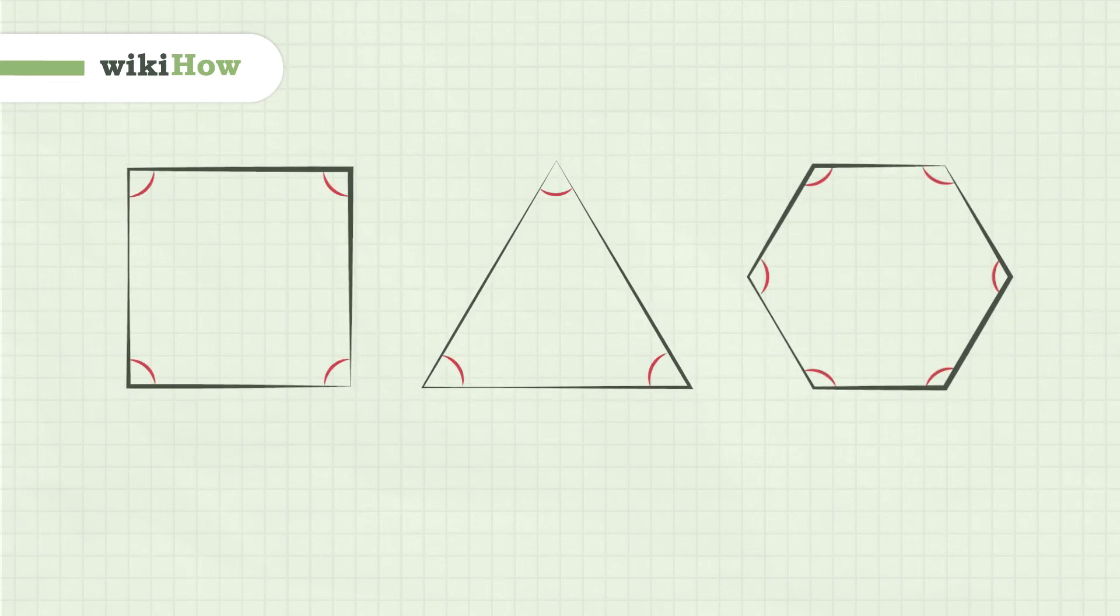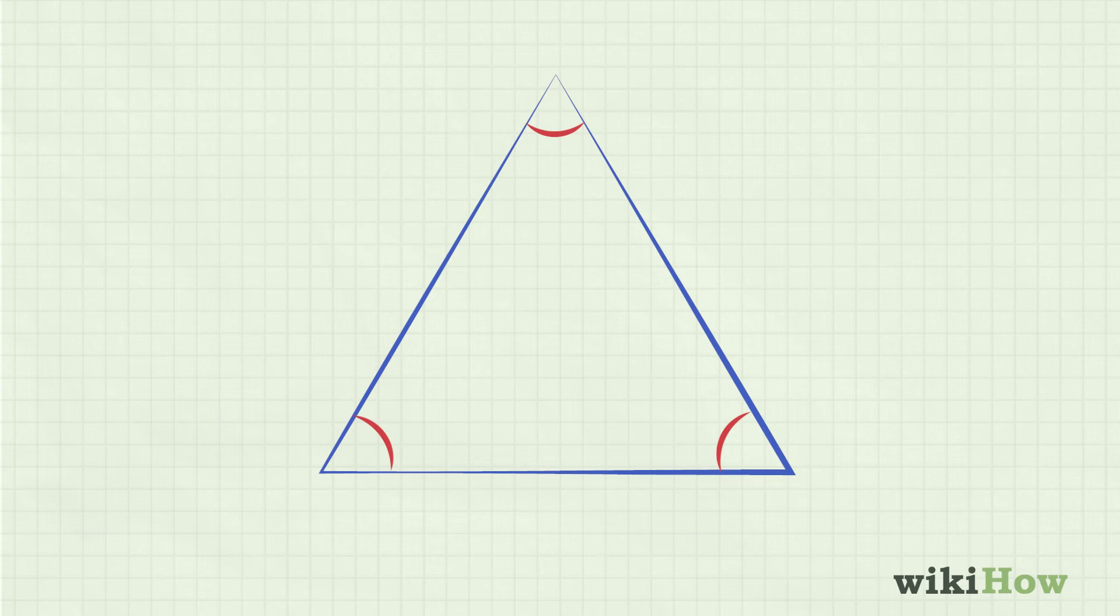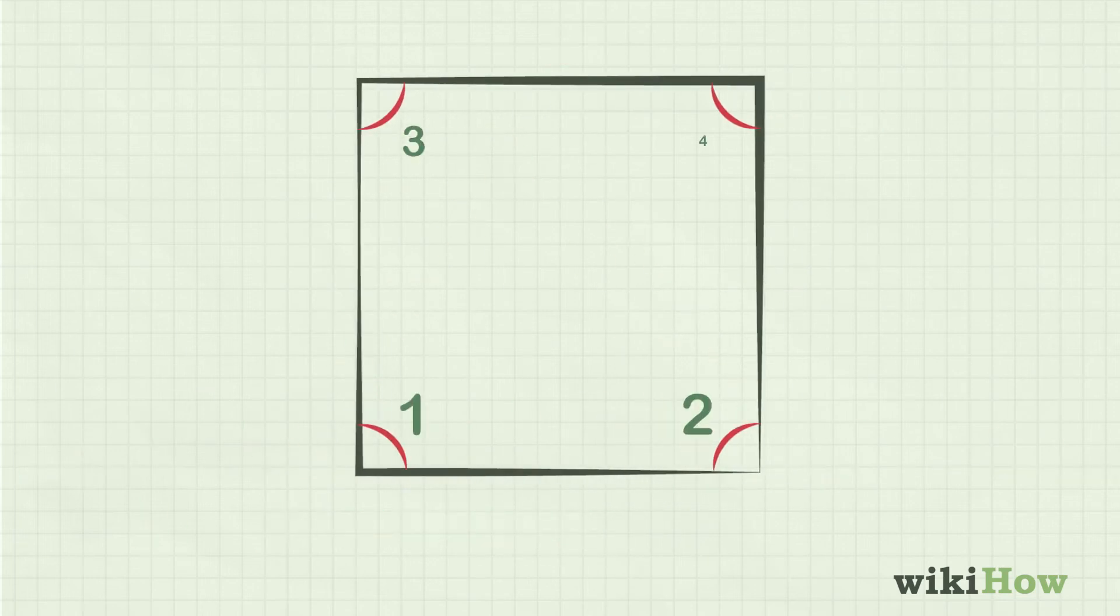To calculate the angles inside a polygon, first count the number of interior angles. A polygon has the same number of interior angles as sides. For example, a triangle always has 3 angles, while a square or rectangle always has 4, and so on.